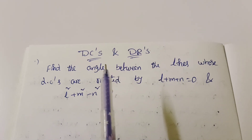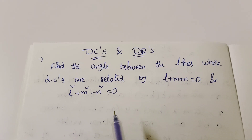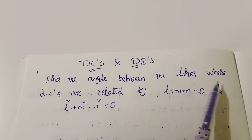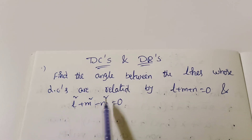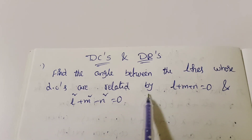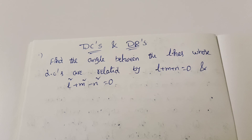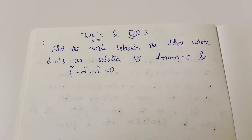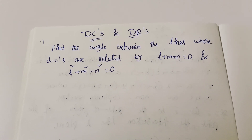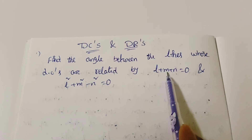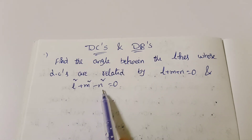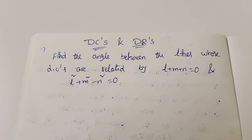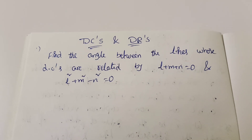Find the angle between the lines whose direction cosines are related by L plus M plus N equal to 0, and L squared plus M squared minus N squared equal to 0. Two lines are given, and we need to find the angle between them.